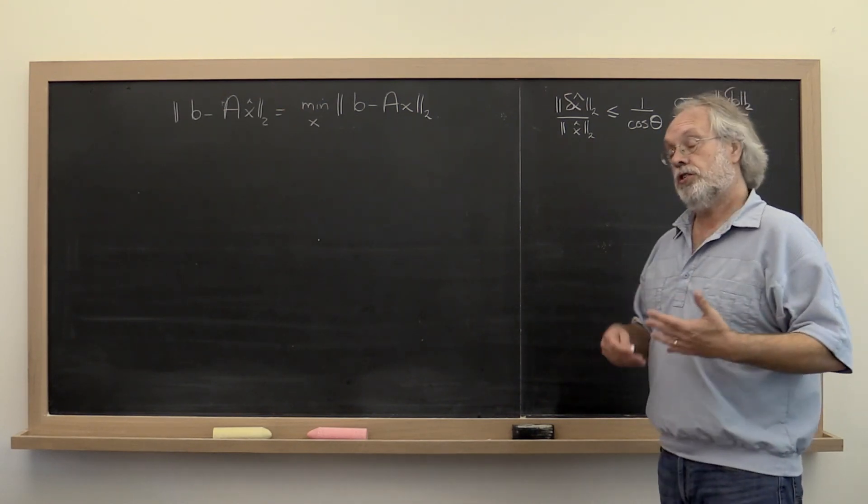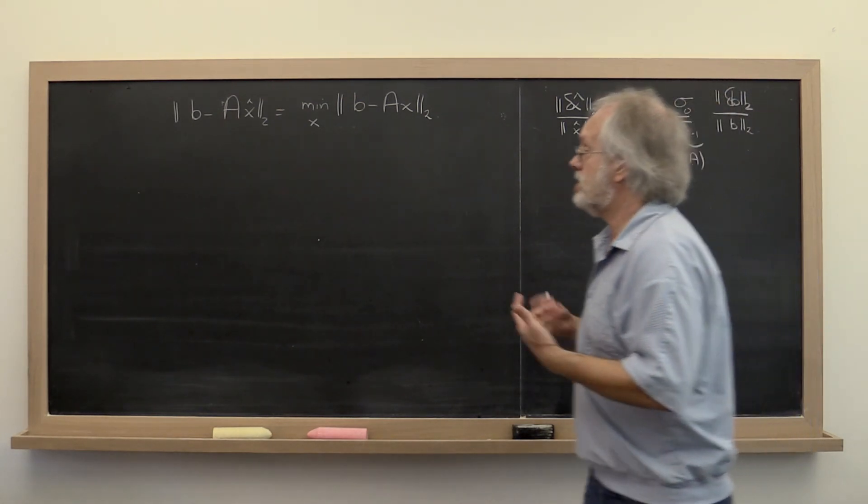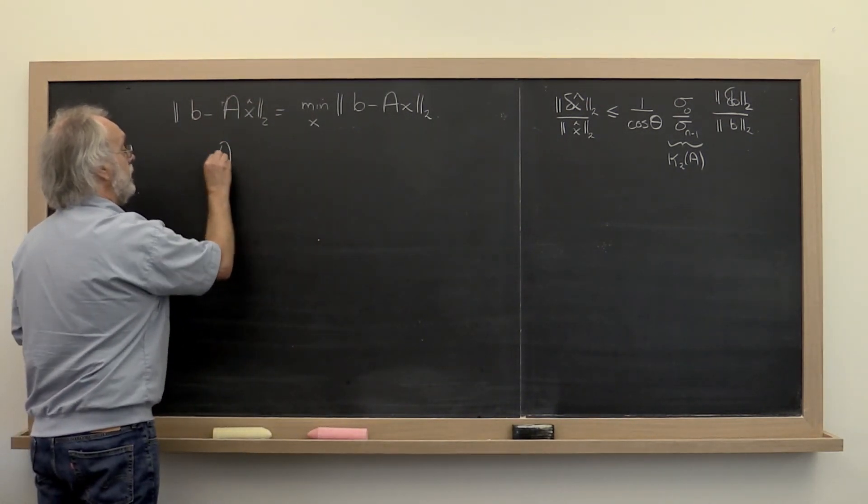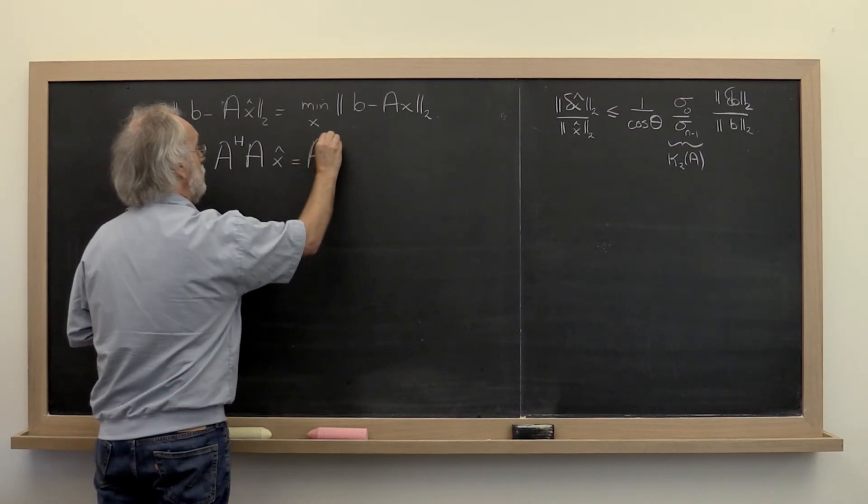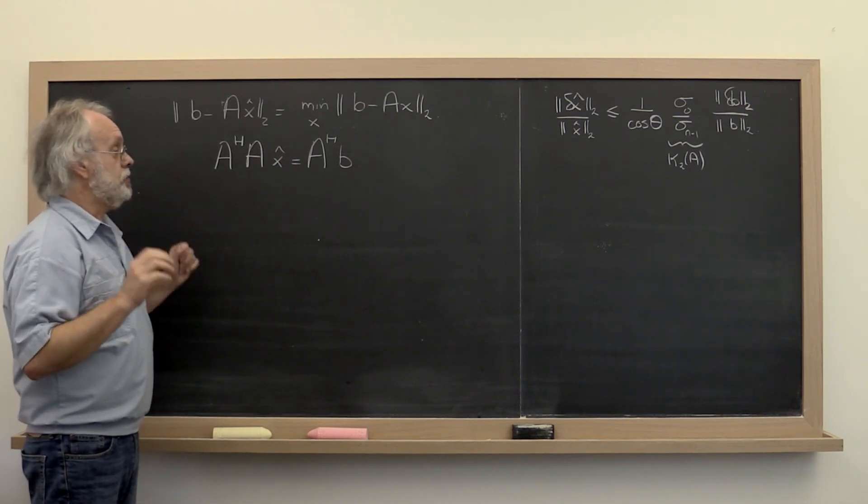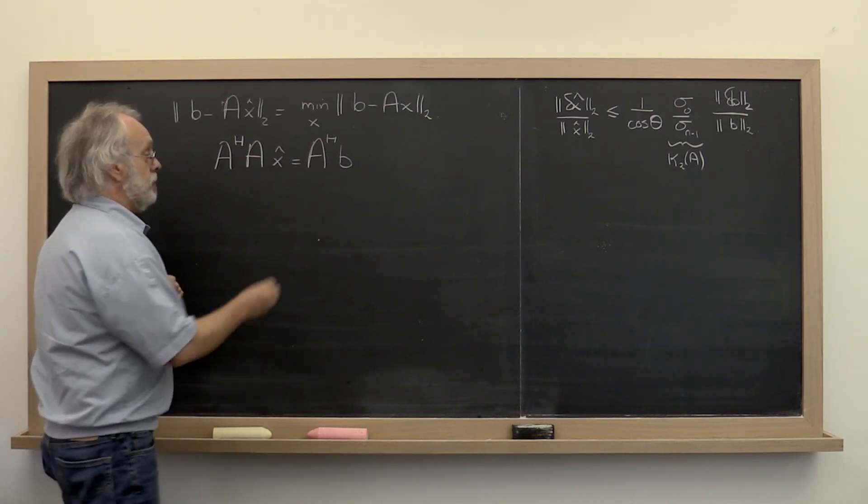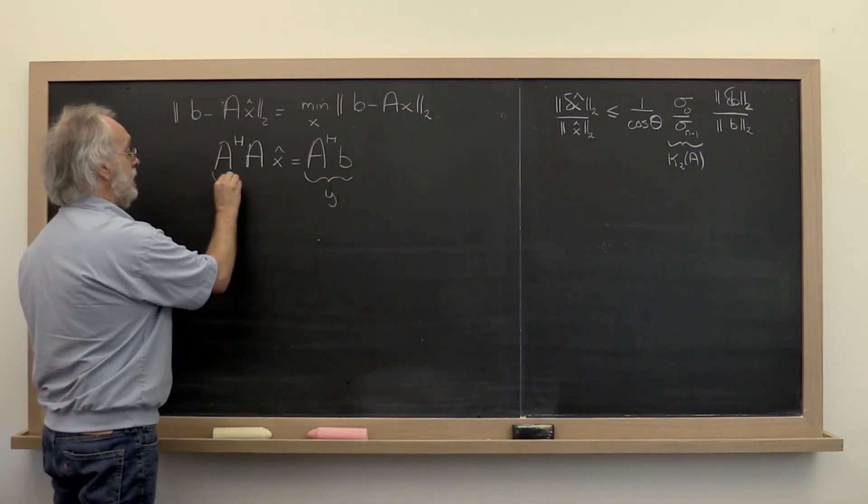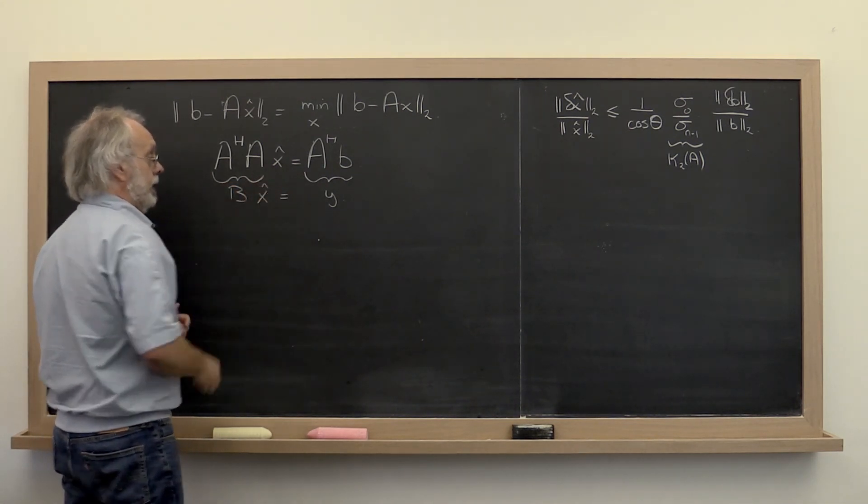Now, we have just learned that there is the method of normal equations for solving this. And what does that involve if A has linearly independent columns? Well, that involves instead solving A Hermitian transpose A times x hat is equal to A Hermitian transpose times B. So far so good. Simple method. You multiply the right-hand side by this, giving you a new vector. Let's call it Y. And then you form this matrix right here. Let's call it B. And you solve B x hat is equal to Y. Everything is beautiful.